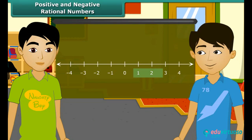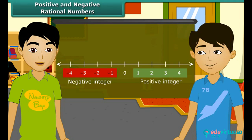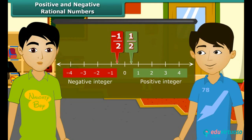How do we represent a rational number on a number line? Look at this number line. Points on the right side of 0 are called positive integers and points on the left side of 0 are called negative integers. Let's mark 1 by 2 on this line — 1 by 2 will lie in between 1 and 0. And minus 1 by 2 will lie in between 0 and minus 1.